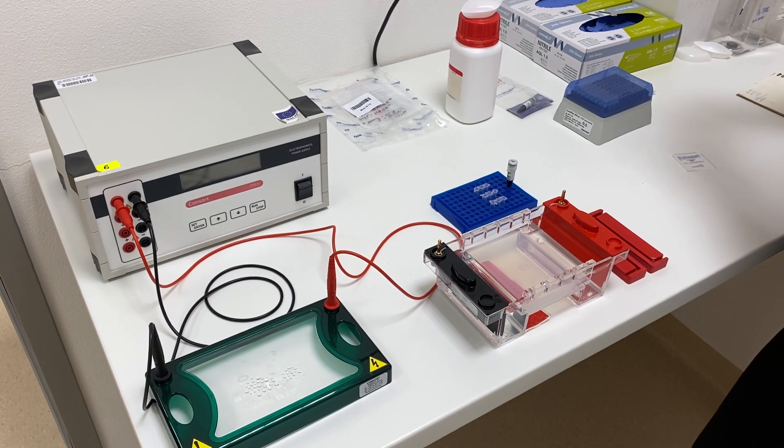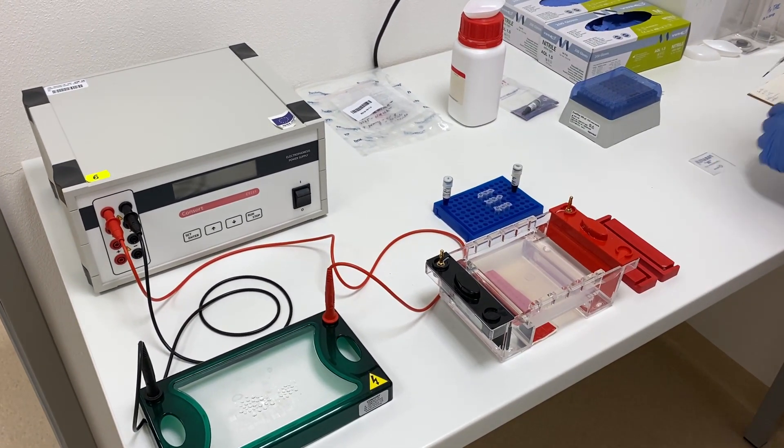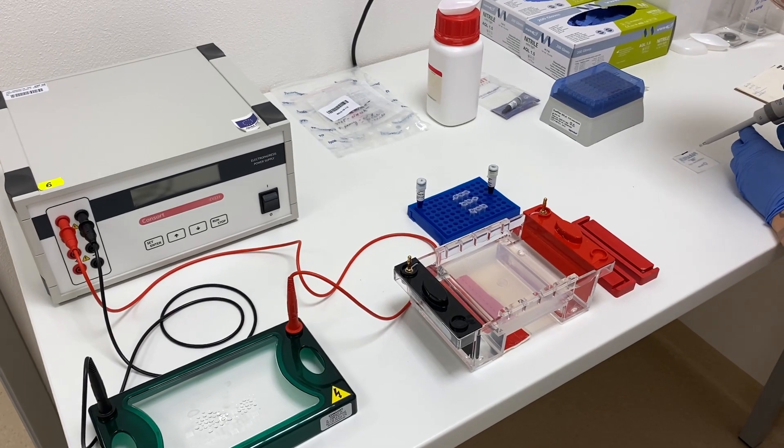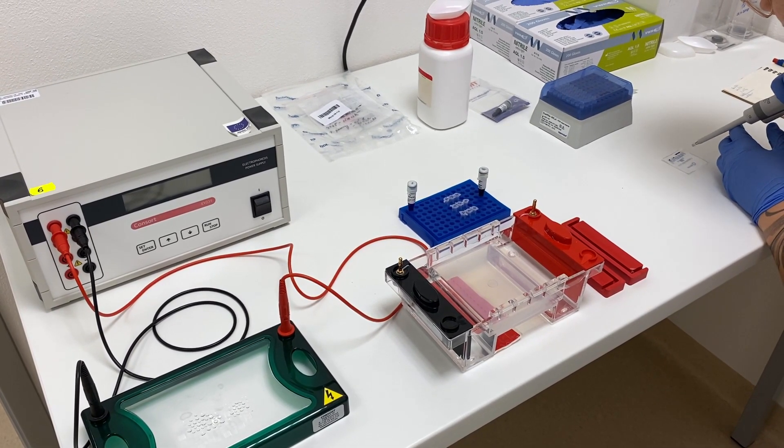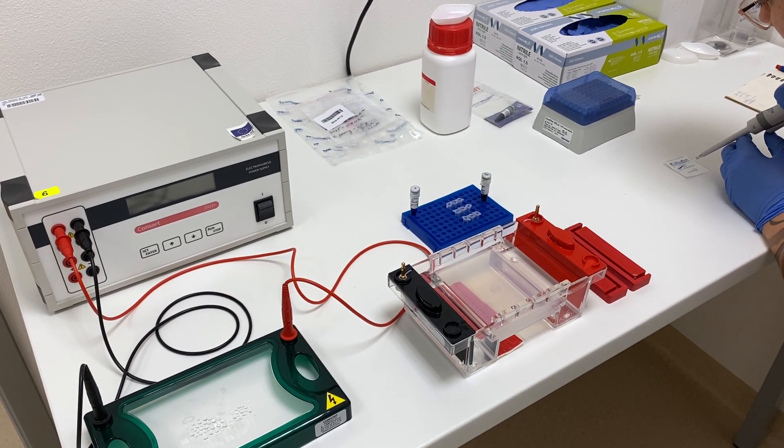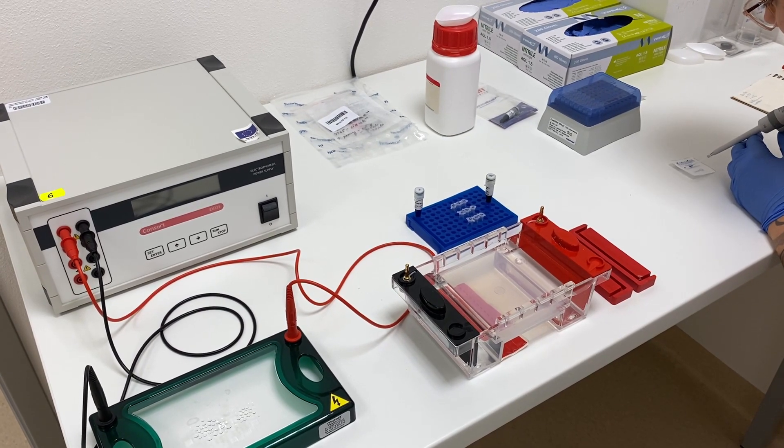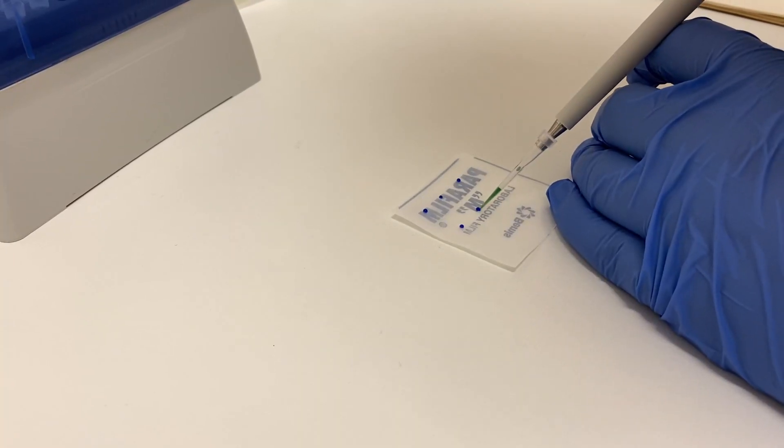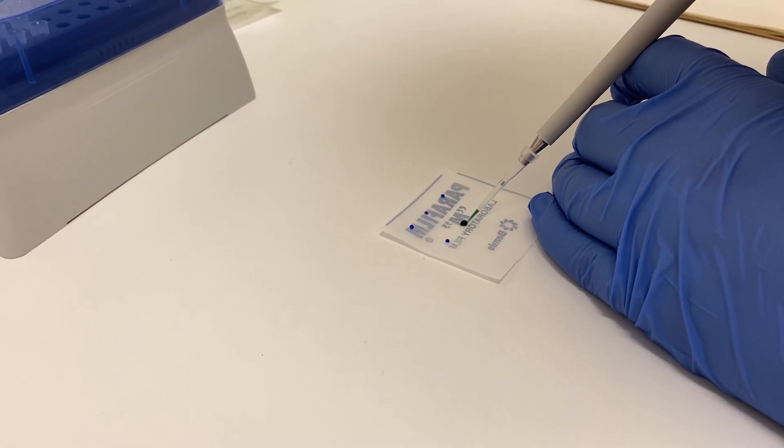Particles with lower molecular weight travel through the gel faster than larger particles, and therefore travel a longer distance at the same time separating them from each other in the gel. Samples together with the dye are applied to separate wells, which allows us to electrophorese multiple samples at once. Please note that each sample has to be applied into its own well in the gel.